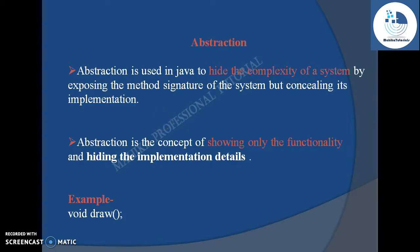We can say that abstraction is the concept of showing only the functionality and hiding the implementation details. Here we specify only what is to be done by giving the signature of the method, but we do not give how it is to be done — that is, we do not provide the implementation or definition of the methods.